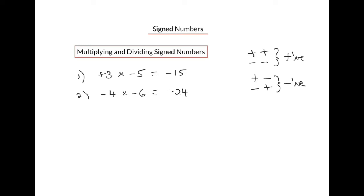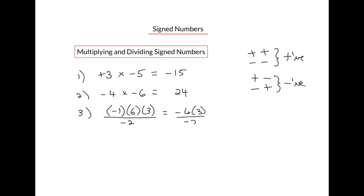For positive numbers, we can eliminate the sign because it's assumed to be positive. Let's take a look at one more example: negative 1 times positive 6 times positive 3 divided by negative 2. We'll do it one step at a time. Negative 1 times positive 6 — the signs are opposite, so negative 1 times 6 is negative 6. Next, negative 6 times positive 3 — again the signs are opposite, so the answer will be negative: negative 6 times positive 3 is negative 18.